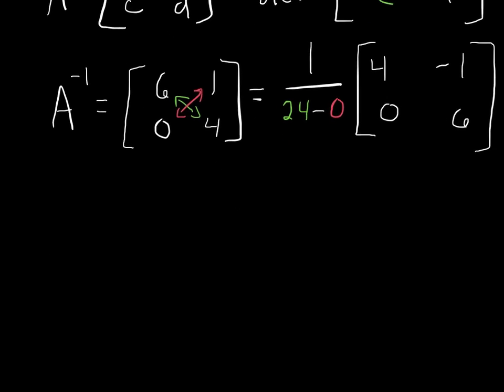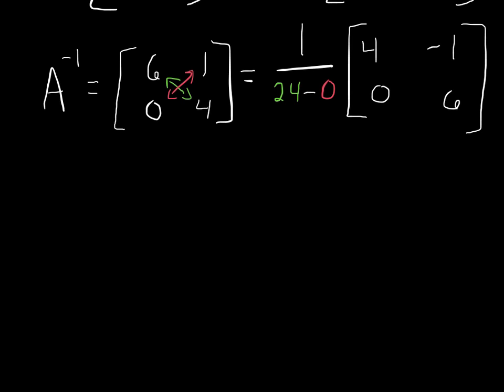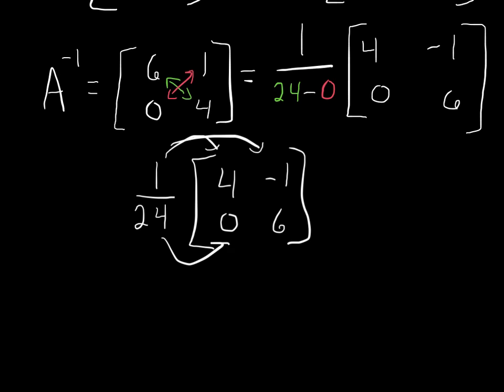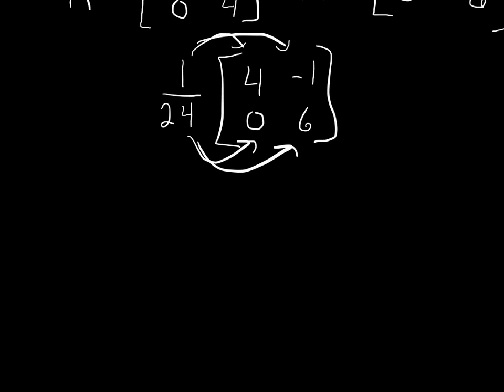So let's simplify that down just a little bit more. We know that 24 minus 0 is still 24. And now we're just going to multiply by that scalar. So again, we just distribute that to each of the terms. So 4 times 1 over 24, we get 4 over 24. Then we'll have negative 1 over 24. Anything times 0 is just 0. And then 6 over 24.